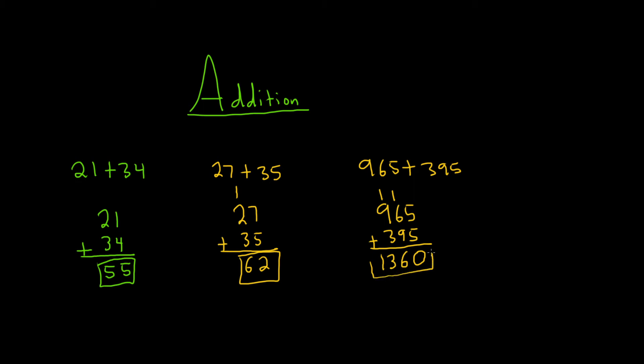Let me go over that one more time. 5 plus 5 is 10, and we carry the 1. 1 plus 6 is 7. 7 plus 9 is 16, you carry the 1. 1 plus 9 is 10. You add that, you get 3, so you get 13. 1360.